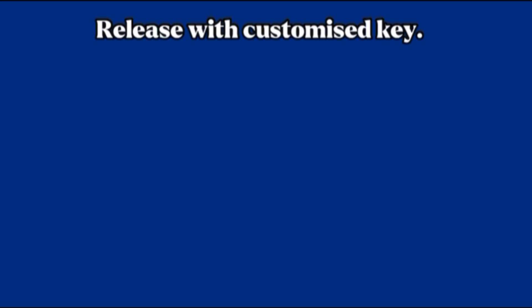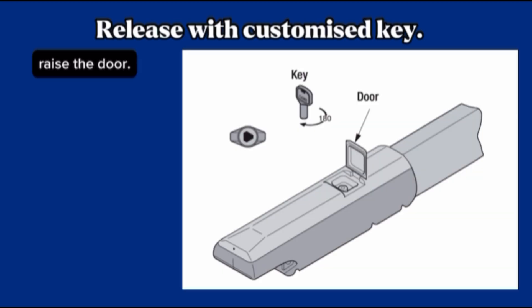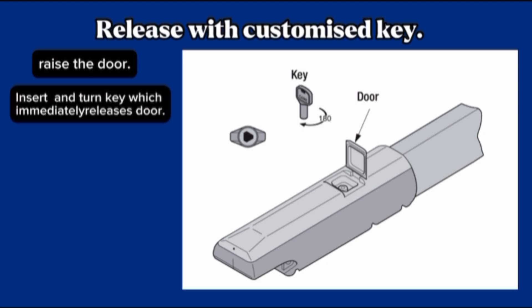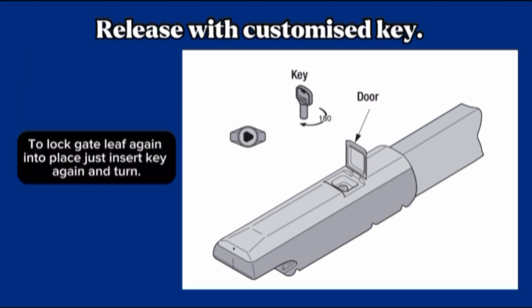Release with customized key. Raise the door. Insert and turn key, which immediately releases door. Manually push or pull gate leaf. To lock gate leaf again into place, just insert key again and turn.